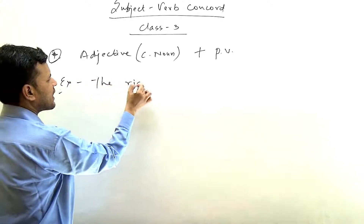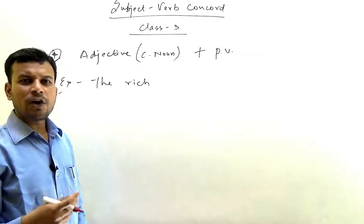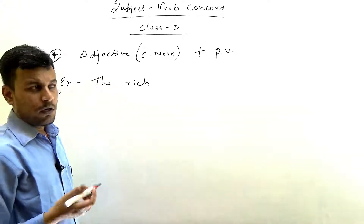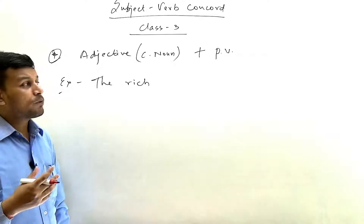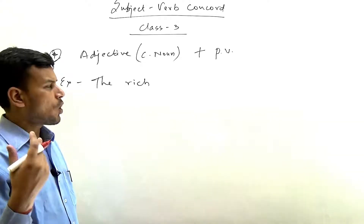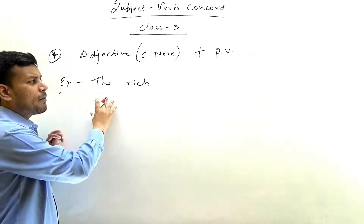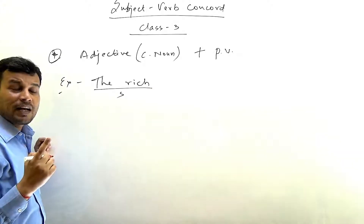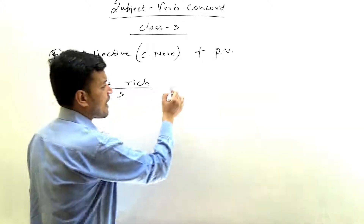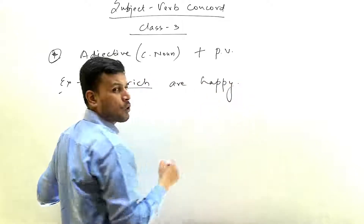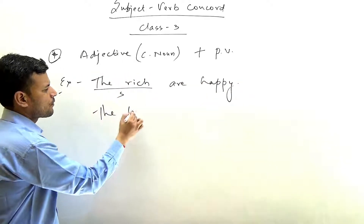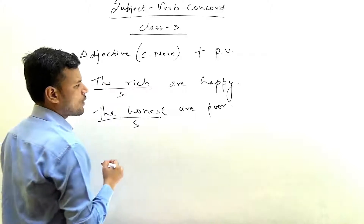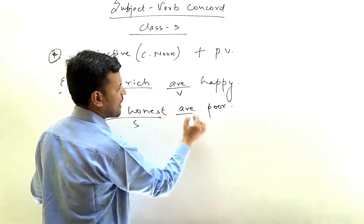'Rich' is an adjective normally used with nouns like 'rich man,' 'rich boy,' etc. But when 'the' is added before it — 'the rich' — it means 'wealthy people.' Similarly, 'the poor' means 'poor people,' 'the blind' means 'blind people,' 'the honest' means 'honest people.' So when 'the rich' or 'the honest' becomes the subject, the verb that follows will be plural — for example: 'The rich are happy,' 'The honest are poor.'